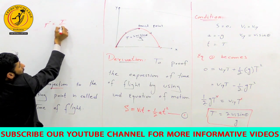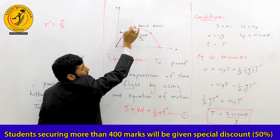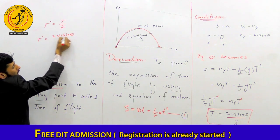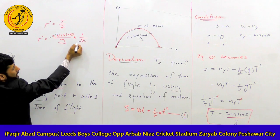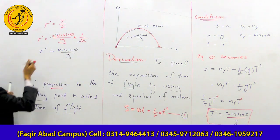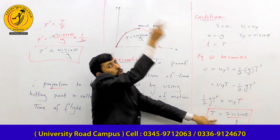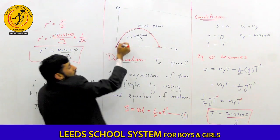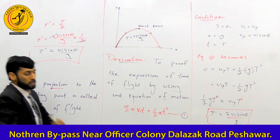The time to the summit point is t' = T/2. Since T = 2·vi·sinθ / g, multiplying by one-half gives t' = vi·sinθ / g. This is the time of flight equation from the point of projection to the highest point.